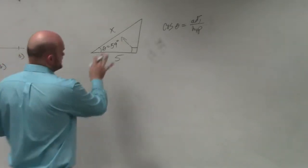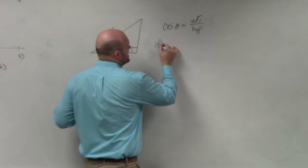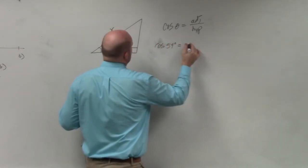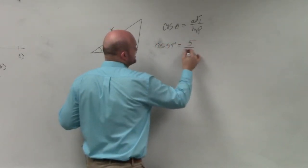We have theta of 59 degrees. We know this is going to be cosine. So I'd write cosine of 59 degrees equals adjacent over hypotenuse.